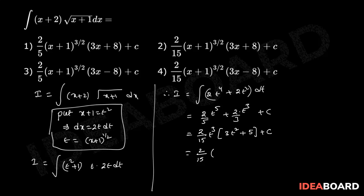Here t = (x + 1)^(1/2), so t³ = (x + 1)^(3/2) and t² = x + 1, giving 3(x + 1) + 5.